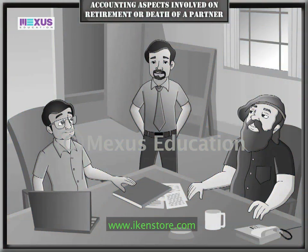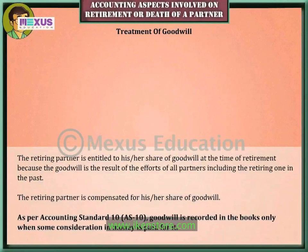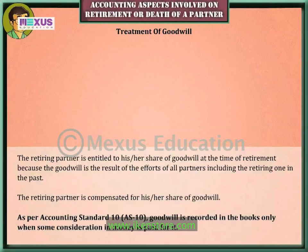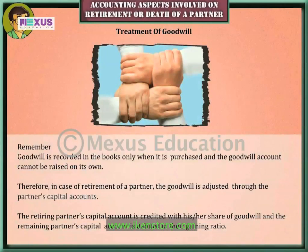The retiring partner is entitled to his or her share of goodwill at the time of retirement, because goodwill is the result of the efforts of all partners including the retiring one in the past. The retiring partner is compensated for his or her share of goodwill. As per Accounting Standard 10 (AS 10), goodwill is recorded in the books only when some consideration in money is paid for it — that is, goodwill is recorded only when it is purchased.